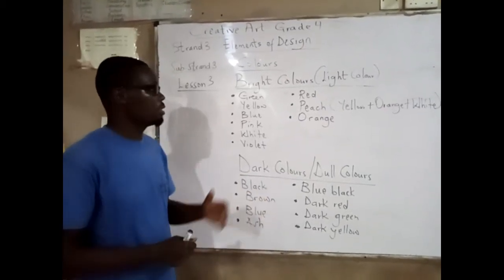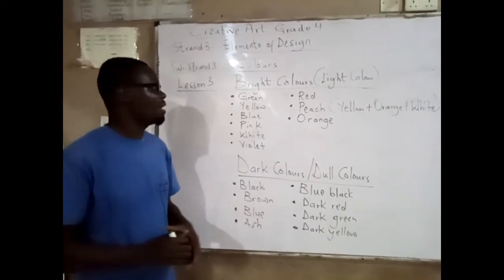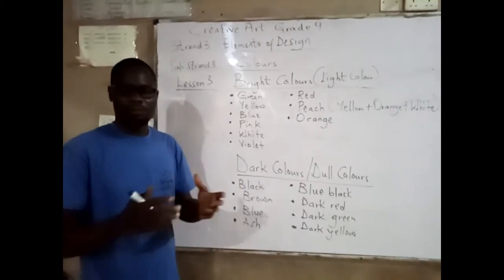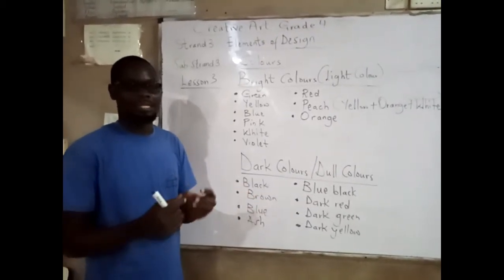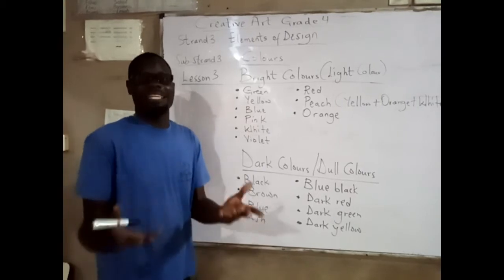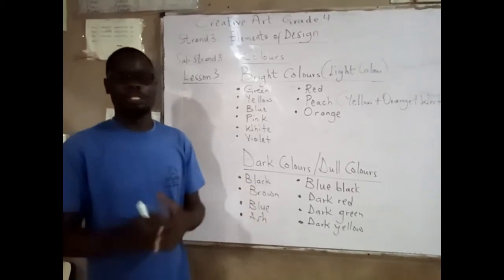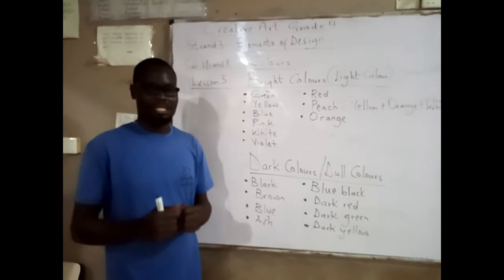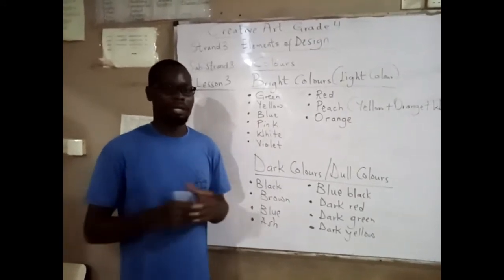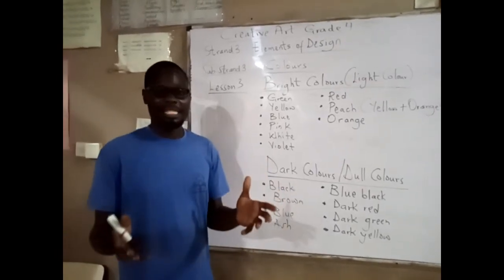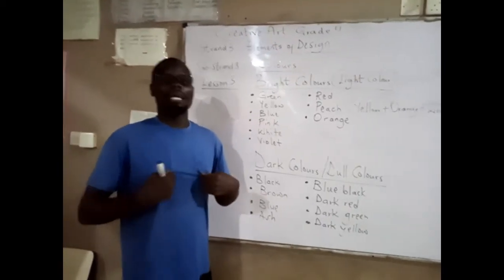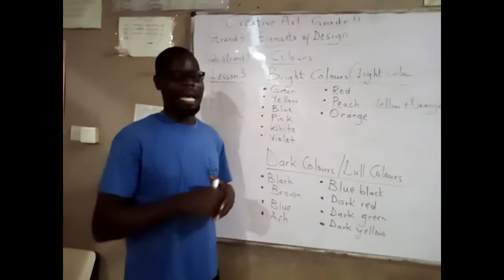Now let's look at another type of color. We have bright colors or light colors. When we say bright or light, we mean those colors that attract — they are very, very attractive. You like to wear them. They reflect light and they don't absorb heat. Those colors always reflect it. You can see an example that I'm wearing. So during this heat or the global warming, you can use this type of color so that it reflects the light or heat.